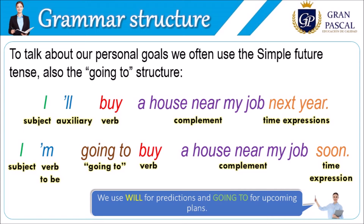In the case of 'going to,' I start with the subject — the pronoun I — plus the verb to be. Remember we have three forms of the verb to be; in this case we use 'am' because we start the sentence with the pronoun I — the contracted form is 'I'm' — plus 'going to.' Then continue with the verb, the complement, and at the end a time expression.